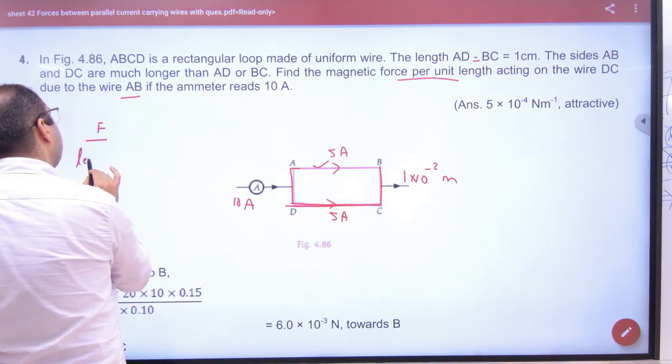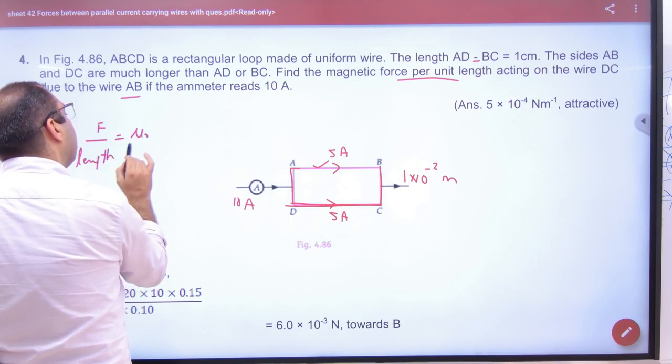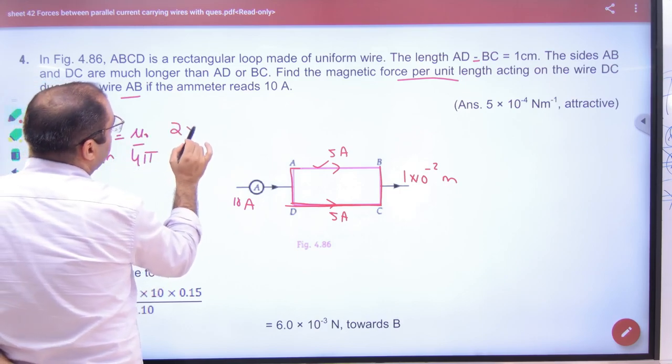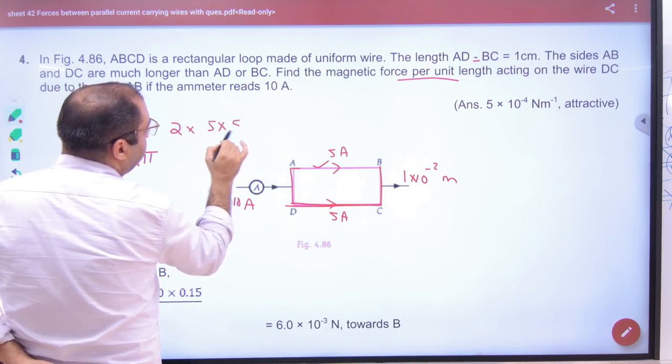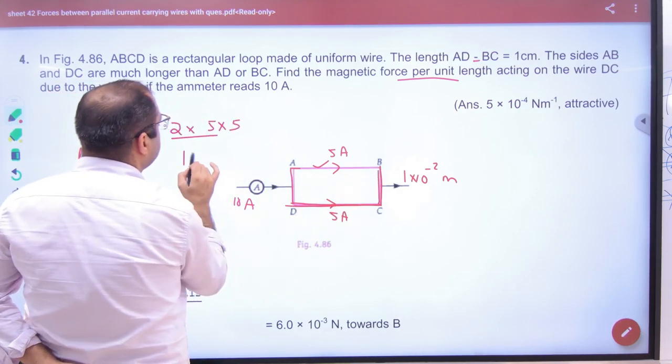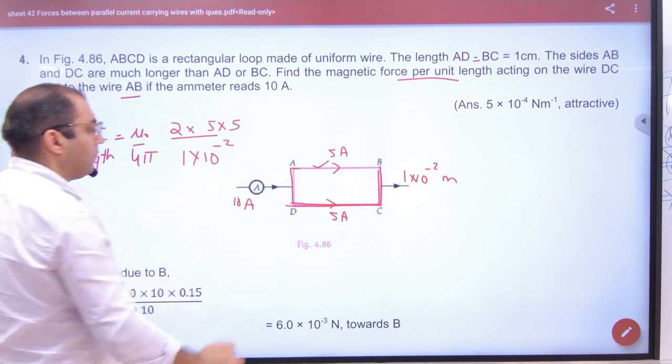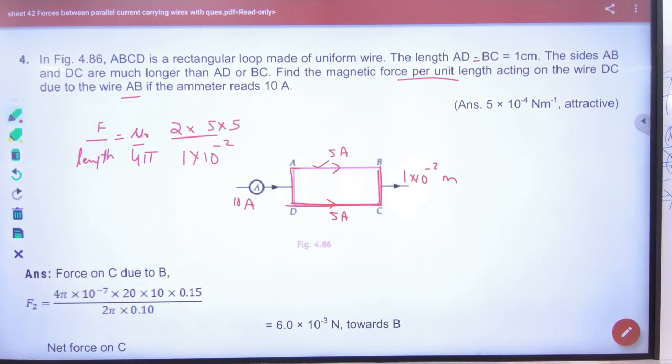In them force per unit length, so force per unit length is taken out. So mu naught by 4 pi into 2 into i into i divided by, how much distance between them? Answer.